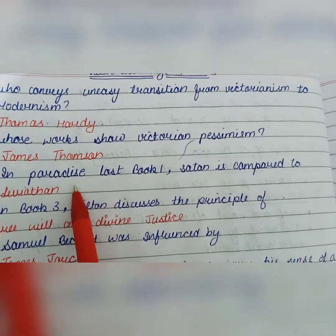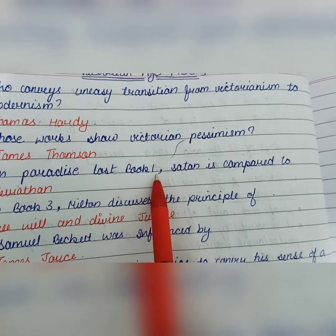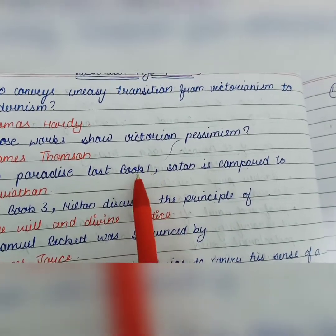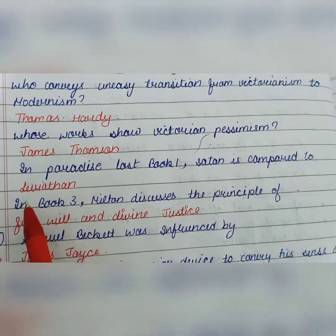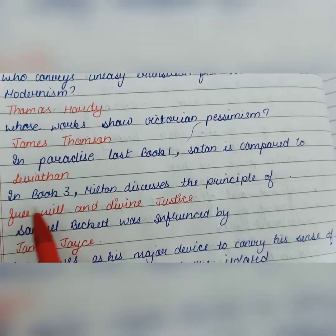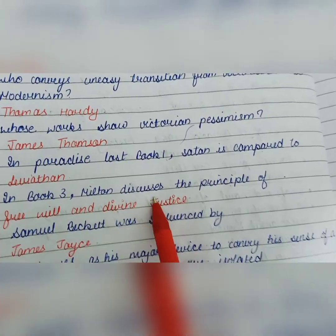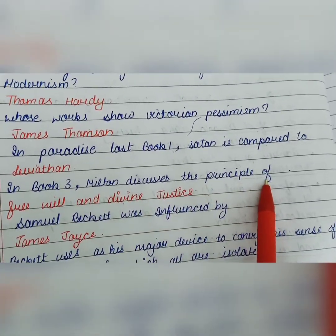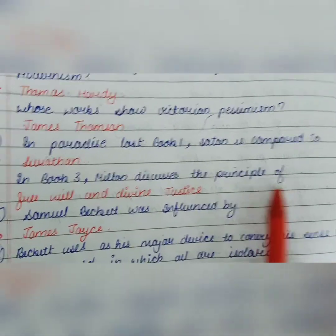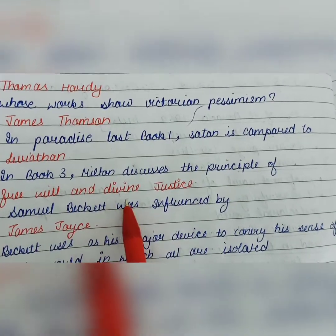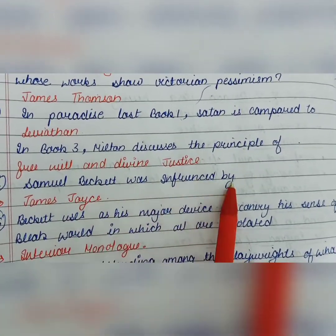In Paradise Lost Book One, Satan is compared to Leviathan. Paradise Lost by John Milton is an epic — it has 12 books. In Book One, Satan is compared to Leviathan. In Book Three, Milton discusses the principles of free will and divine justice.